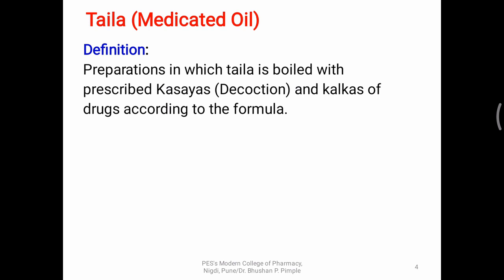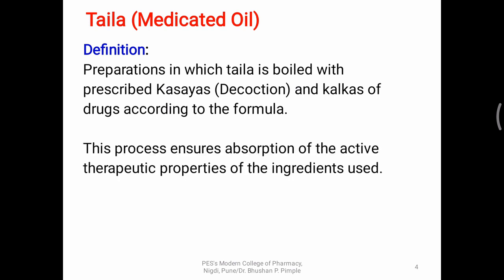Taila specifically uses only oil, whereas there is a similar formulation called Gritta which uses cow ghee — clarified butter — as the base. It involves three major components: drug, oil paste, and aqueous paste. The process ensures the absorption of active therapeutic properties of the ingredients, meaning the drugs are completely imbibed into the oil. Most of the phytoconstituents which are lipophilic form part of the active ingredients in these medicated oils.